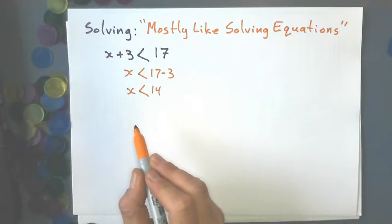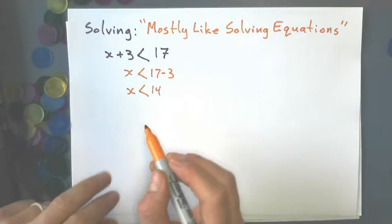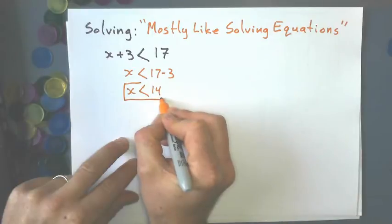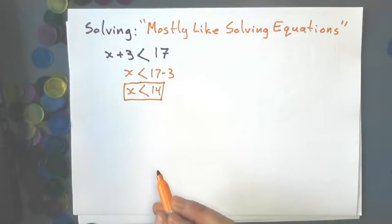So I do have an infinite set of answers here. This means x is all numbers less than 14: 13, 12, 11, etc., negative 20 million.